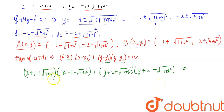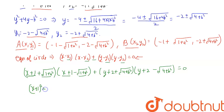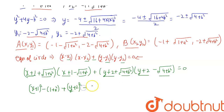We apply the identity (a + b)(a − b) = a² − b². This gives (x + 1)² − (1 + a²) + (y + 2)² − (4 + b²) = 0.